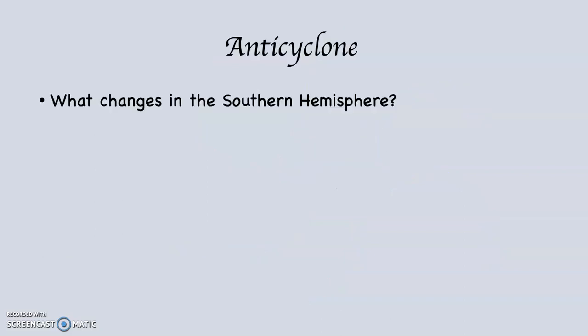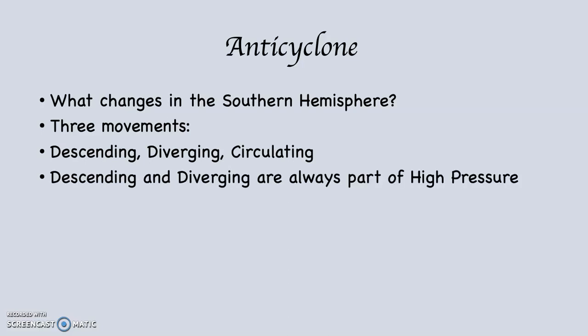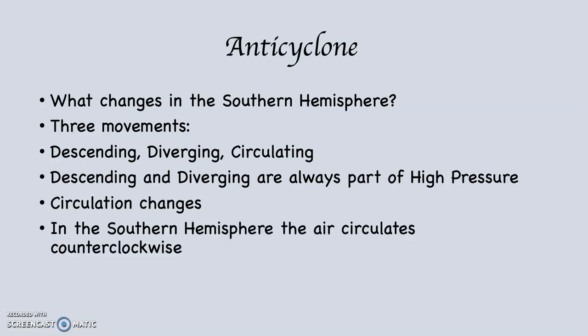What changes in the Southern Hemisphere? Remember there are three movements: descending, diverging, and circulating. Descending and diverging — along with clear skies and dry air — are always part of high pressure. What changes is circulation. In the Southern Hemisphere, the air circulates counterclockwise and out. So in the Northern Hemisphere it's clockwise and out; in the Southern Hemisphere it's counterclockwise and out.